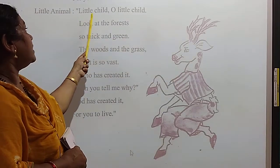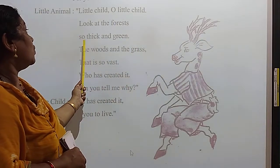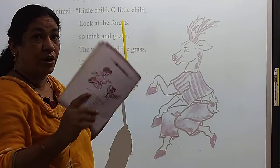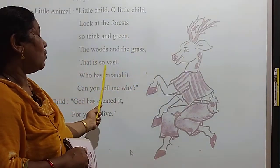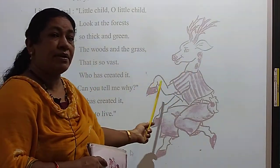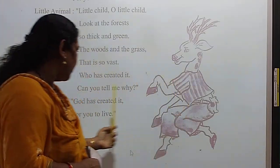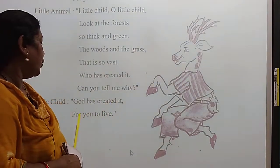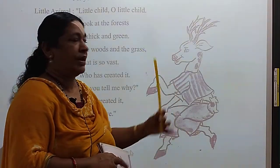Again, little animal. Little child, little child, look at the forest, F-O-R-E-S-T, so thick and green. The woods and the grass, that is so vast, V-A-S-T vast. Who has created it? Can you tell me why? Little child, God has created it for you to live in the forest.